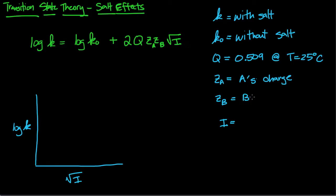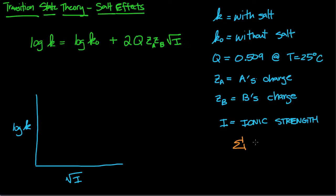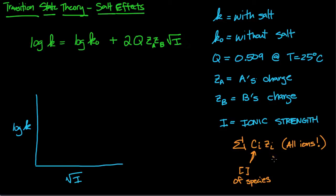I is the variable called ionic strength. Out of all these variables, ionic strength is the biggest hassle because you have to calculate it. The way you calculate it is by doing a summation of the concentration of ionic species i times the charge of that species i, squared, and you need to do this for all ions present in solution. ci is the concentration of a given species and zi is the charge of that species.